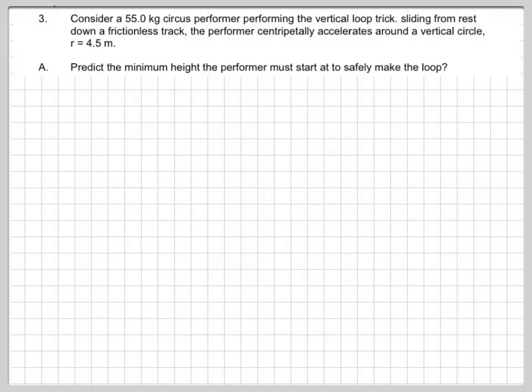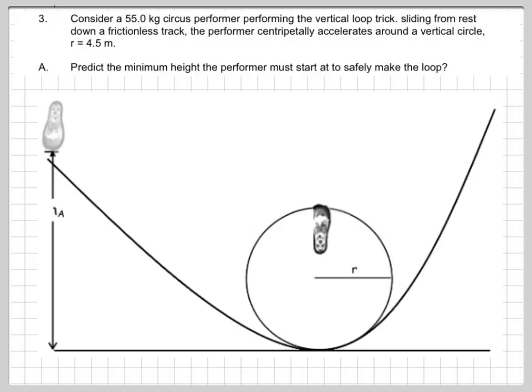We formalize this problem by setting up a consider-the-following kind of scenario. This is a 65 kilogram circus performer trying to perform a vertical loop trick. For simplicity, we'll make the track frictionless and we'll consider what happens when the circus performer centripetally accelerates around the vertical loop and you're given the radius and some of the specific details. And most importantly, what we want to know is how high above the loop does the performer have to start at in order to safely make the loop.